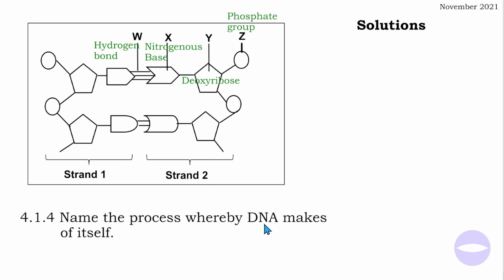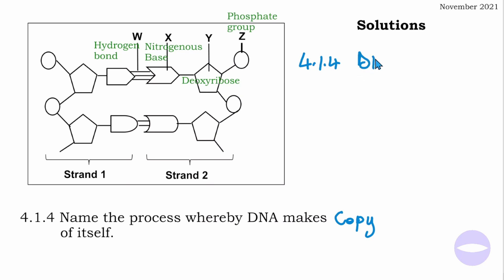Question 4.1.4: name the process where DNA makes a copy of itself. That process is called DNA replication. This is the process where DNA makes a copy of itself.